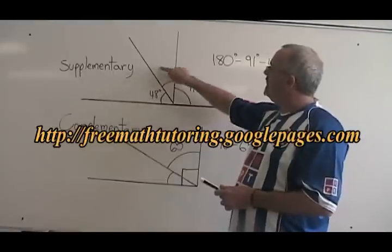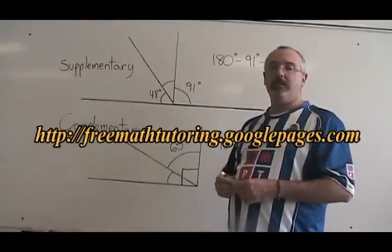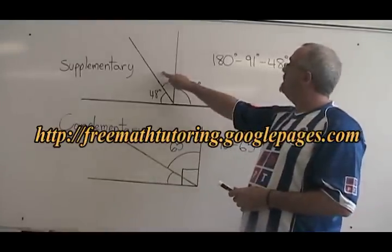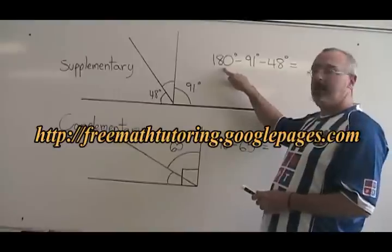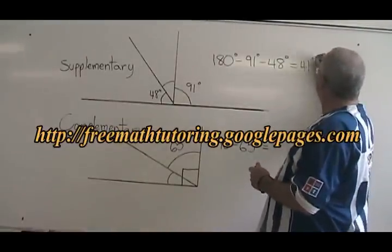That means these three smaller angles add up to equal 180 degrees. We are able to say that the angles are supplementary, and we can find the measure of the missing angle by saying 180 minus 91 minus 48 equals 41 degrees.